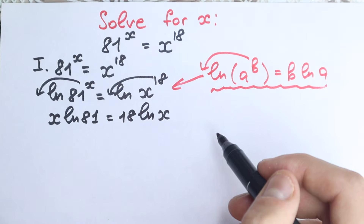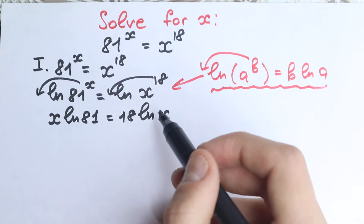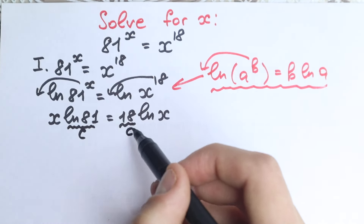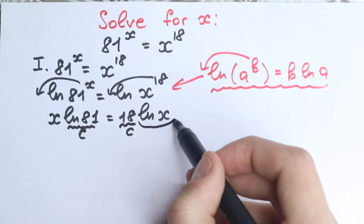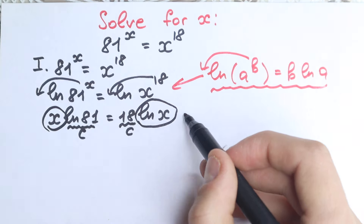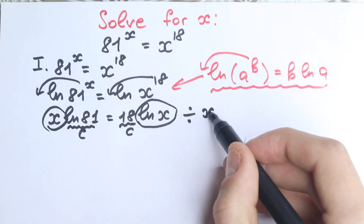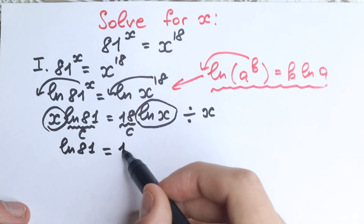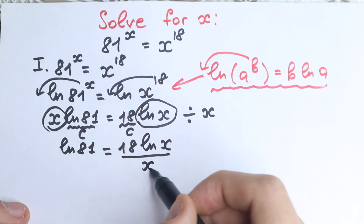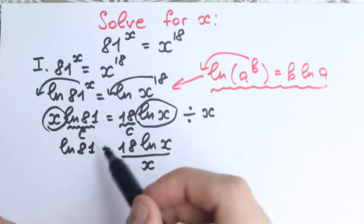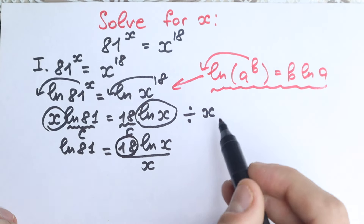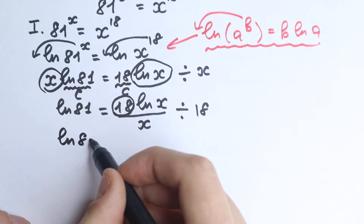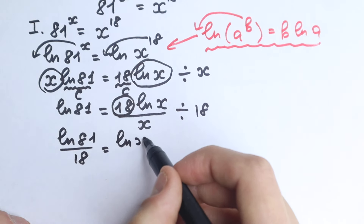Now we want to group our variables on one side and constants on the other. We have x times ln(81) = 18 times ln(x). Let's divide both sides by x first — that cancels the x on the left — giving us natural log 81 equals 18 times natural log x over x. Then let's divide both sides by 18, so we have natural log 81 over 18 equals natural log x over x.